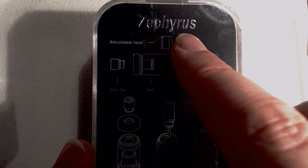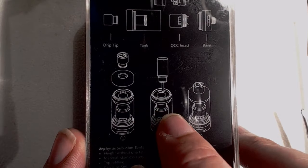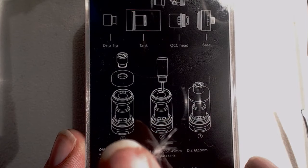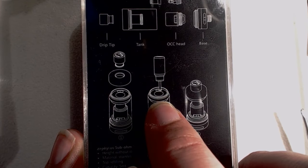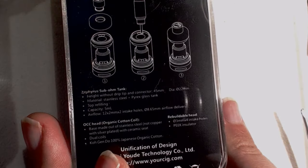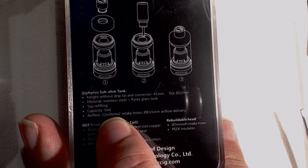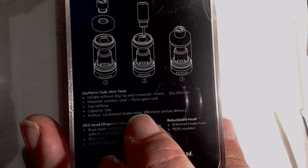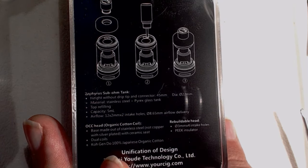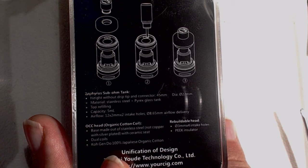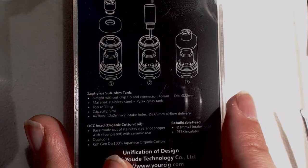So we can see there, it illustrates the rebuildable head section, the drip tip, the tank, the OCC head, and the base, and how to put it all together, how to fit it. This is going to require using a needle nose bottle or a syringe, but more on that later. Gives us some dimensions on height, also gives us some statistics on airflow as well. It's 12 by 2mm by 2 intake height holes, or a 8.65mm outside diameter airflow delivery. Does it give us the capacity of liquid? Yeah, 5ml, there it is, right there.